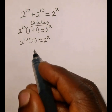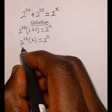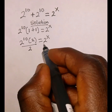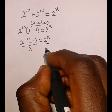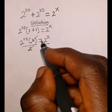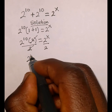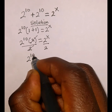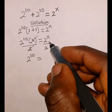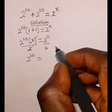Now we divide both sides by 2 in order to eliminate this 2. So we divide the left hand side by 2 and also the right hand side by 2, so that this 2 cancels. We are left with 2 raised to the power of 10 on the left hand side, which is equal to 2 to the power x divided by 2 to the power 1.